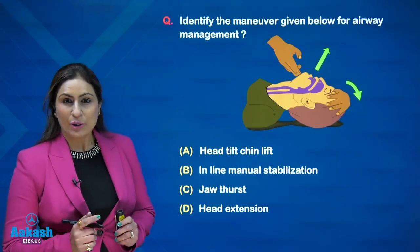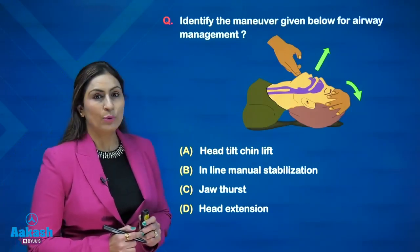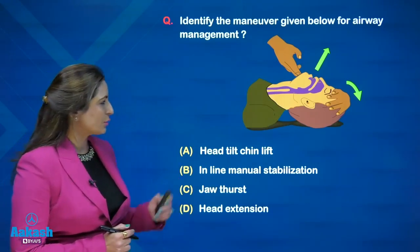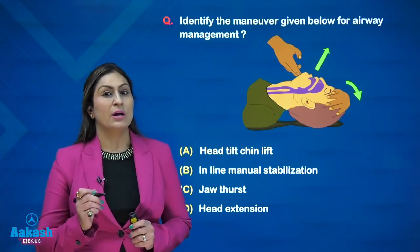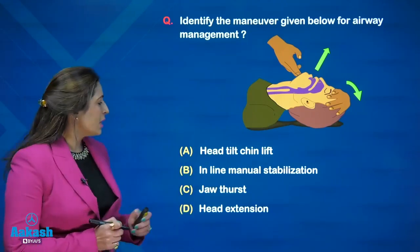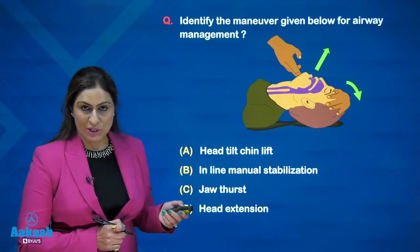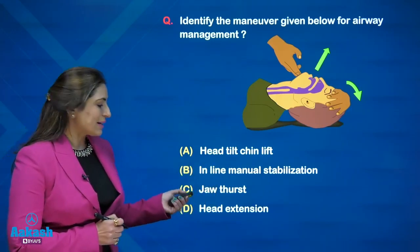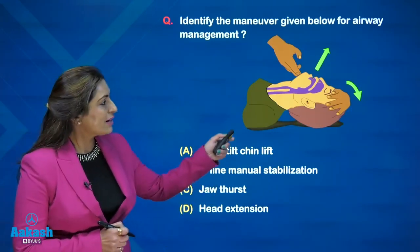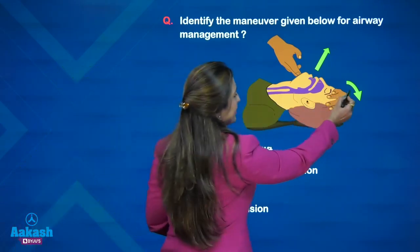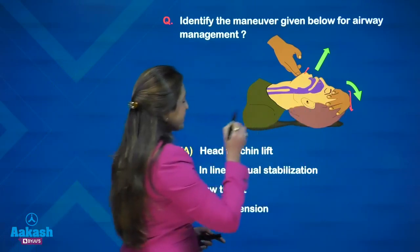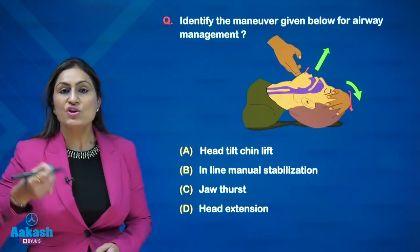Welcome back to the session on Cardiopulmonary Resuscitation. We are going to start with Advanced Cardiovascular Life Support. Let us begin with the question: identify the manoeuvre given below for airway management. The options are head tilt and chin lift, manual inline stabilisation, jaw thrust, and head extension. You can see here that there is head tilt — the person is tilting the head and lifting the jaw. So this is the head tilt and chin lift manoeuvre.